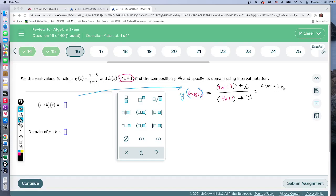plus 1 plus 6 in the numerator, 4x plus 1 plus 3 in the denominator. We could combine the numbers which are like terms, so 1 and 6 is going to be 7, so 4x plus 7 over 4x plus 4, and that is our function that we put here.